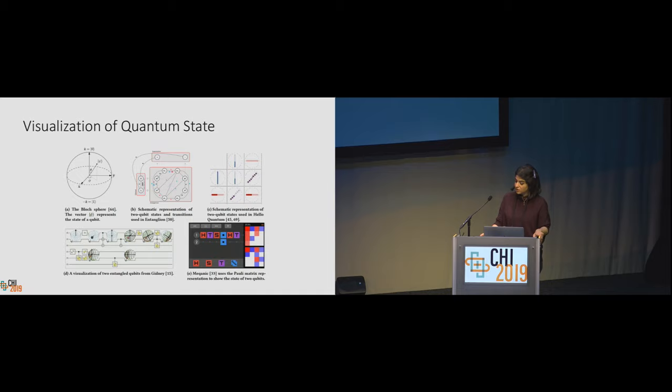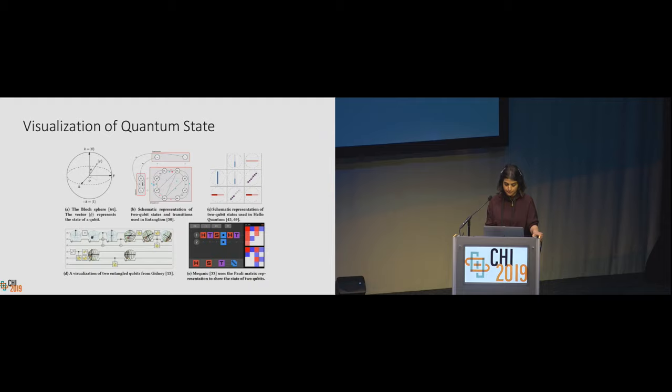Visualization of qubit states is difficult to create because the number of achievable quantum states is exponential with respect to the number of qubits. HCI researchers can utilize information visualization methods to build more effective visualizations for quantum computing. User studies exploring the interpretability of large-scale graphs and other large-scale visualizations can contribute to improved visualizations of quantum states.